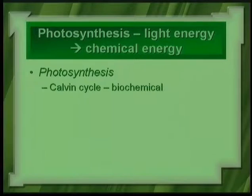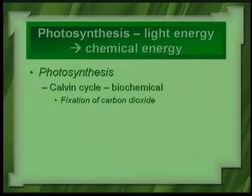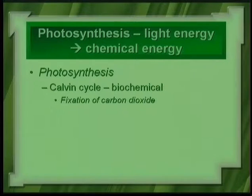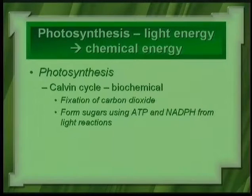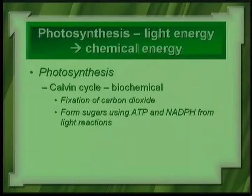The next part of photosynthesis is called the Calvin cycle — this is the biochemical part. Carbon dioxide from the atmosphere, at only about 0.035% of the atmosphere, enters here. Carbon dioxide is often a limiting factor. During the Calvin cycle, you have the fixation of carbon dioxide to form sugars. Glucose is C₆H₁₂O₆ — six carbons — and these sugars are formed using the energy from NADPH and ATP from the light reactions.